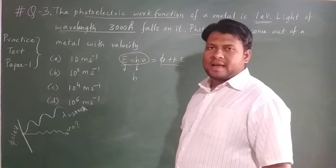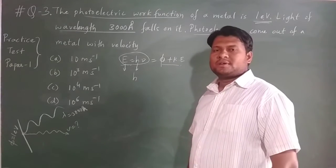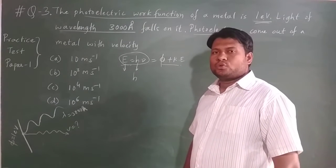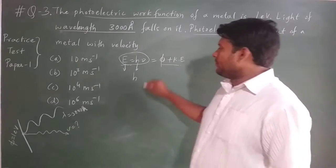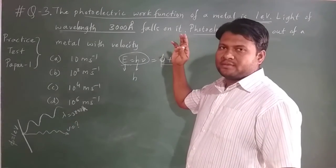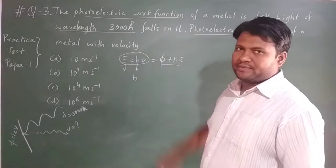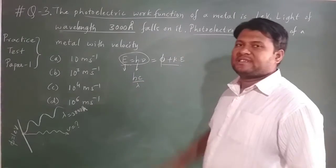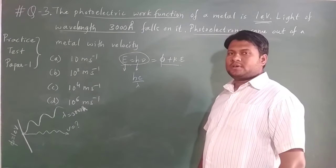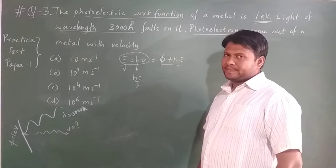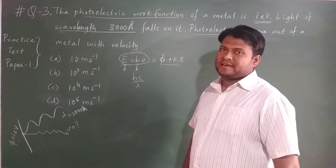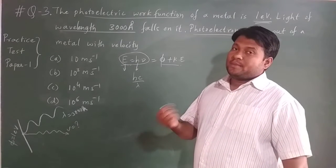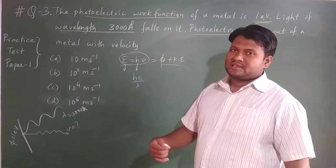H is Planck's constant, with value 6.62 × 10⁻³⁴ joule-seconds. Frequency is not given, so instead of writing frequency, I am going to substitute C divided by lambda. We know the value of C — that is the speed of light — and we know the wavelength, 3000 angstrom, which can be written as 3 × 10³ × 10⁻¹⁰.